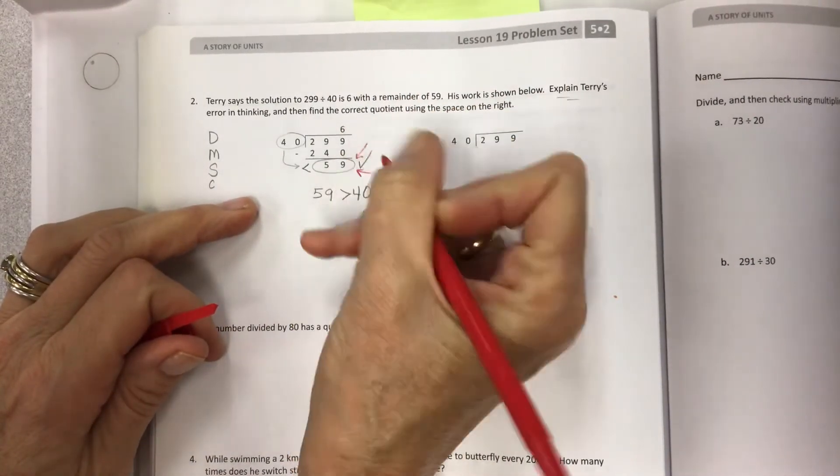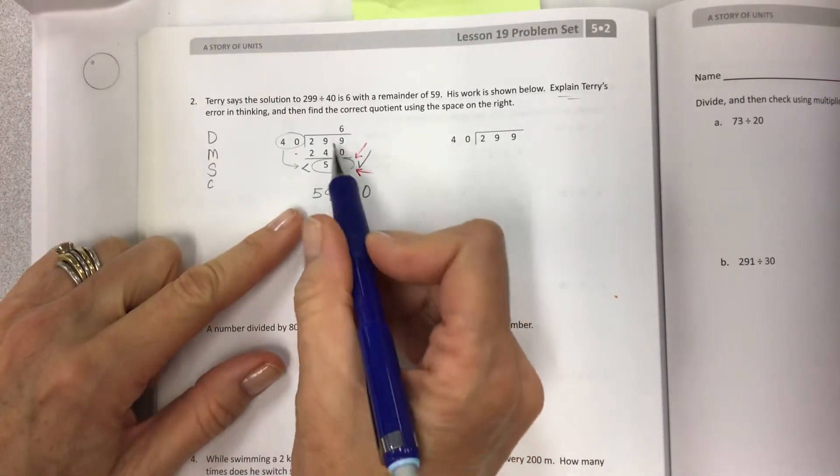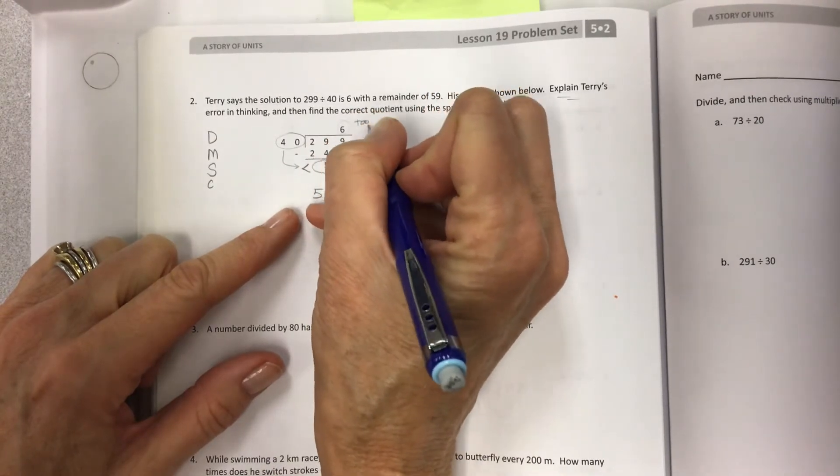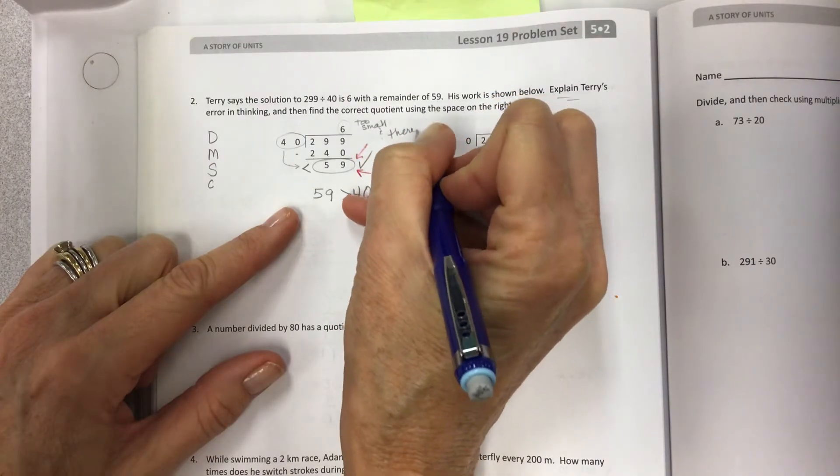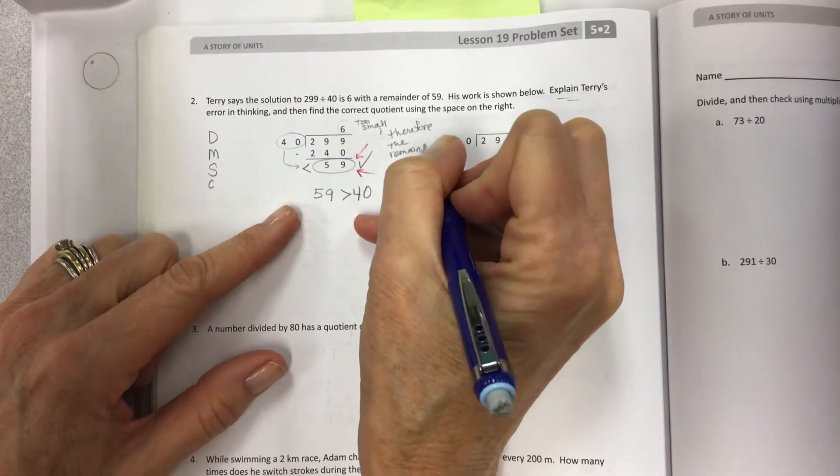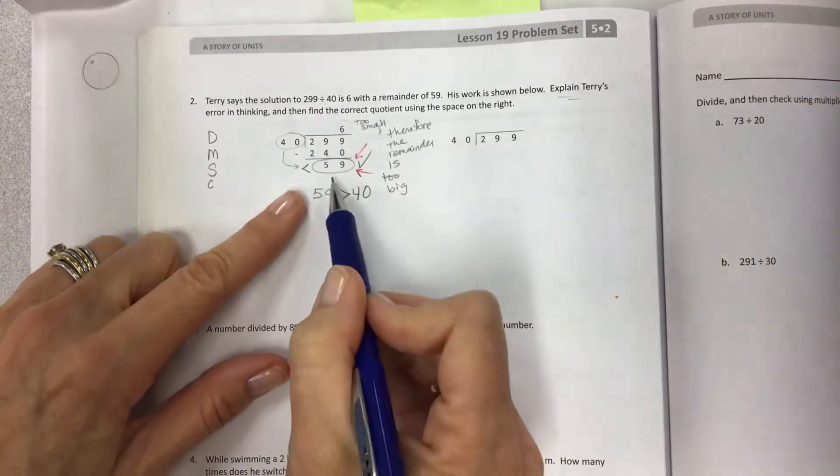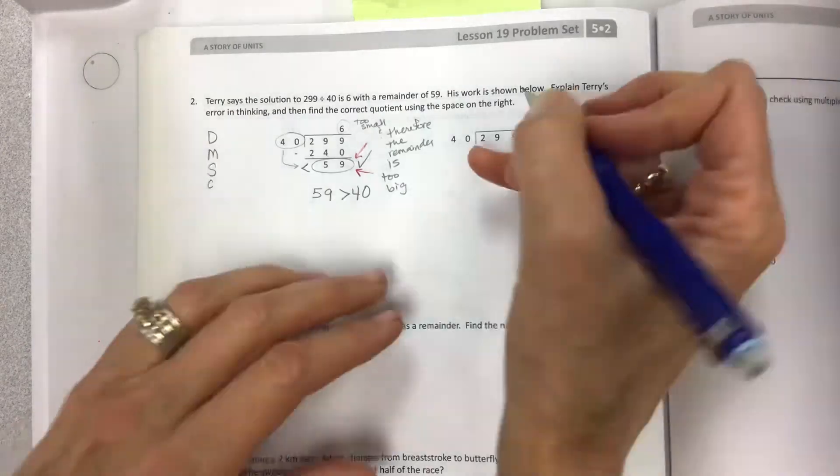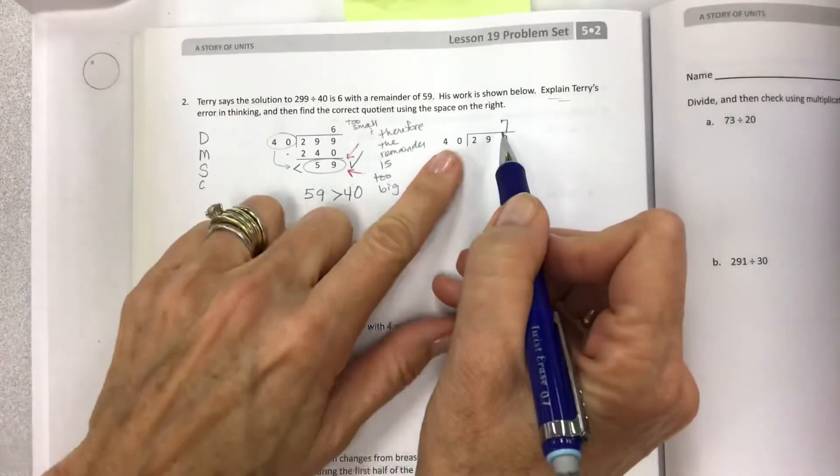This is a problem. This is where I would get my pen and I'd be like, oh dudes, you know, check it out. Like that's too big. It's too big. That's too big. So the problem here is that this is too small. And therefore, the remainder is too big. You can't have a remainder that's this big. What it means is you have to try something else.